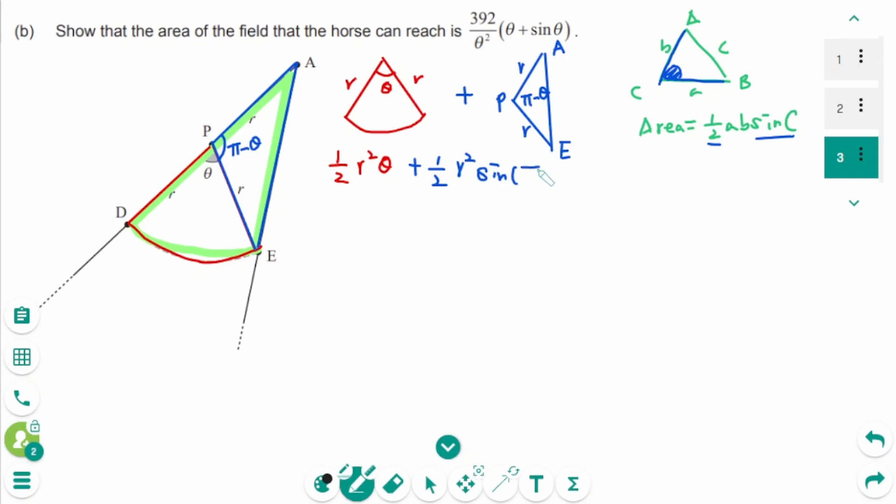Sin the angle pi minus theta. Use the compound angle identities: sin A minus B equals sin A cos B minus cos A sin B.